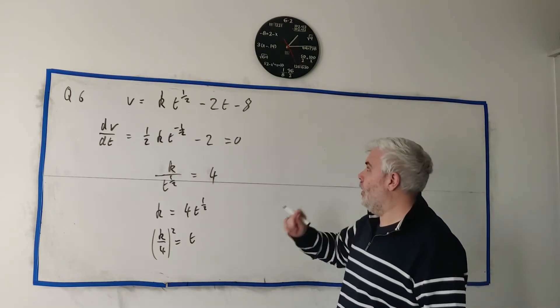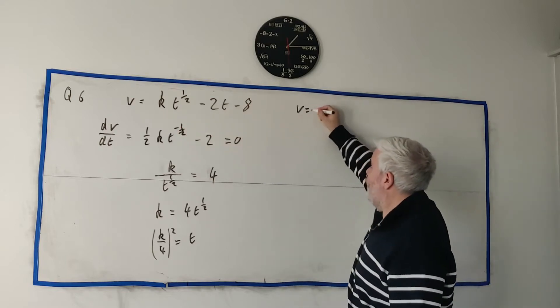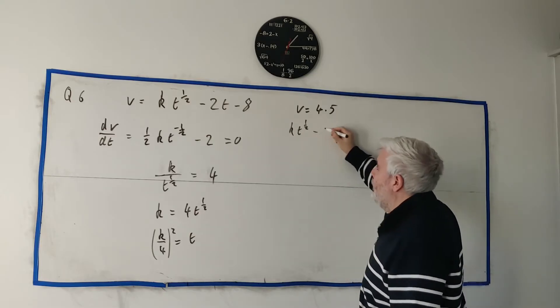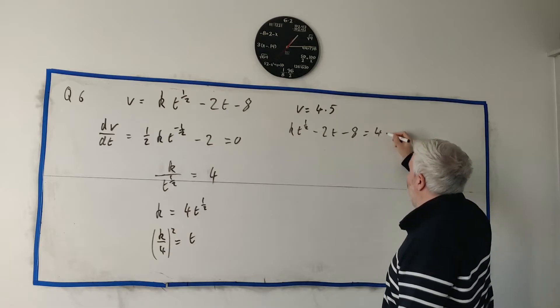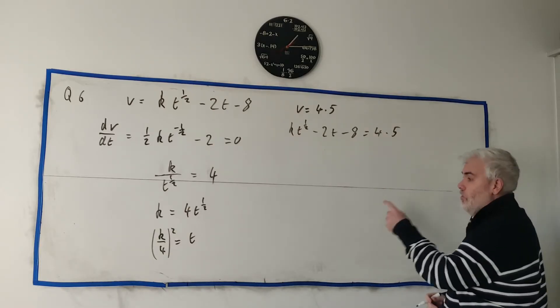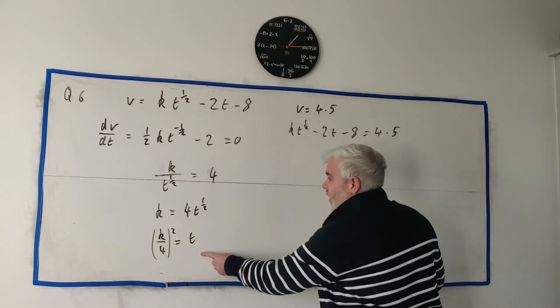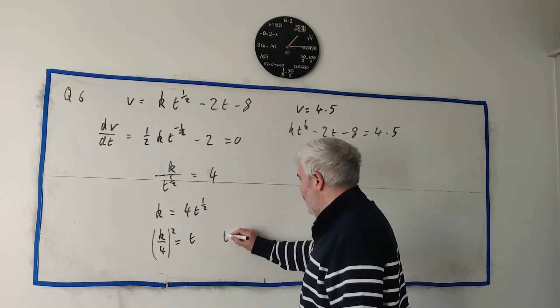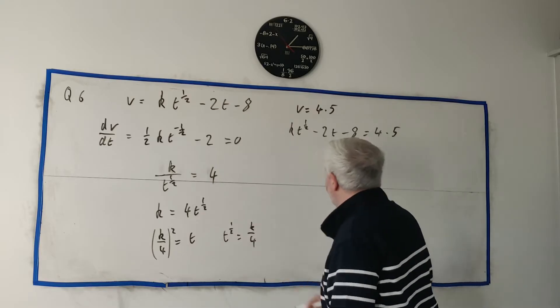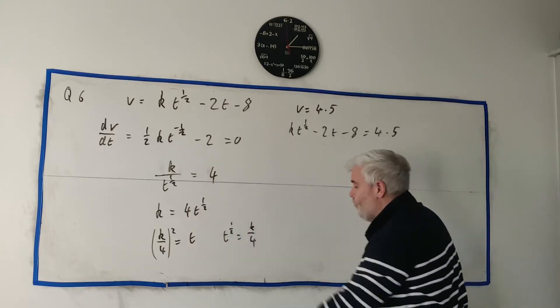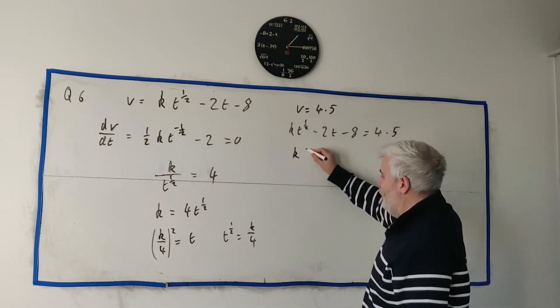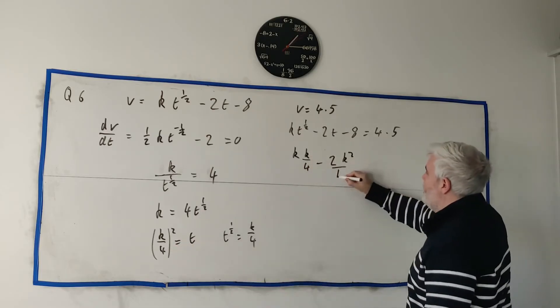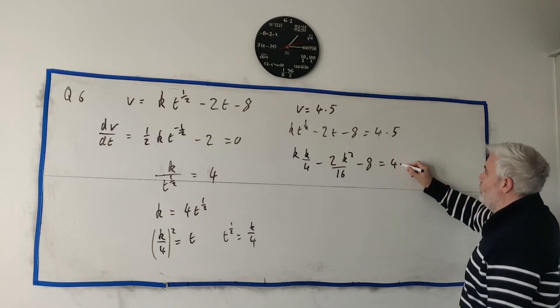We would get that a four can come over. k over four is equal to t to a half. Square both sides. We get t on this side and we get square on that side. So t is equal to k squared over 16. That'll be useful in a moment, because we're ignoring the first bit of information they told us. v is equal 4.5. That means k t to the power of a half minus 2t minus 8 is equal 4.5 at the maximum. But also at the maximum, we know what t is. So I can just put t in, or I know what t to the power of a half is as well.